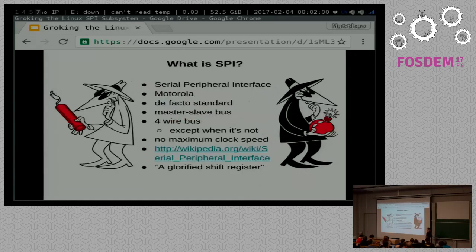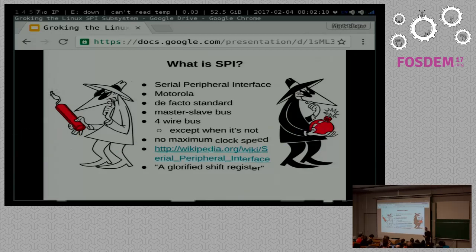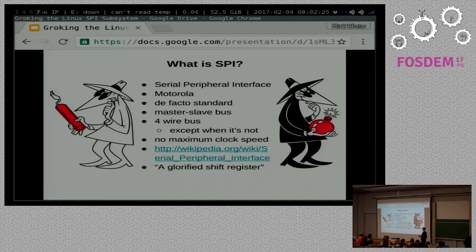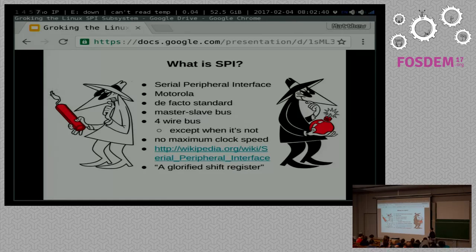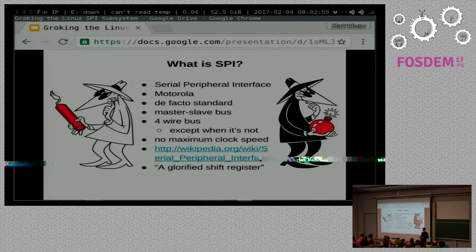Getting into what SPI is: serial peripheral interface. Motorola developed this — it's a de facto standard, so if you're hoping for a written spec with a committee, you won't find it here. It's a master-slave bus, four wires. There's no maximum clock speed; obviously there are practical limits that chips run into. If you lie about anything, you can go to the usual reference URL and find the truth.